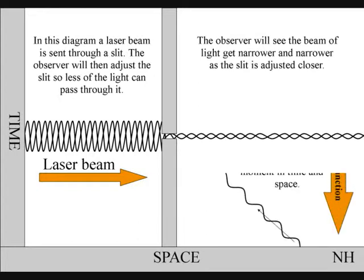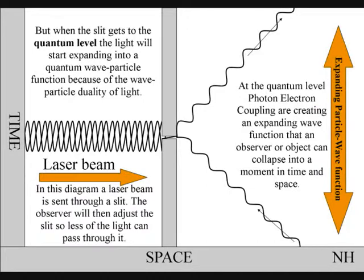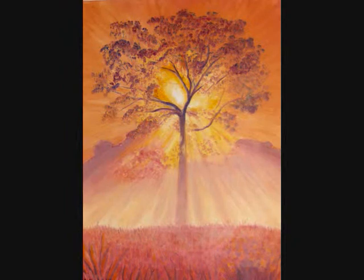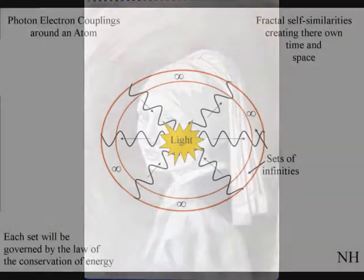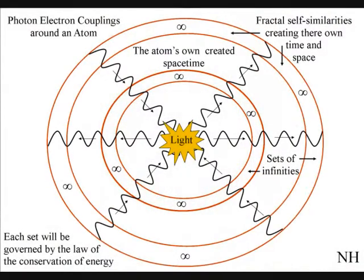But when the slit gets to the quantum level, the light will start expanding into a quantum particle wave function. When this wave function comes in contact with an object or observer, it will collapse into a new moment of time and space.